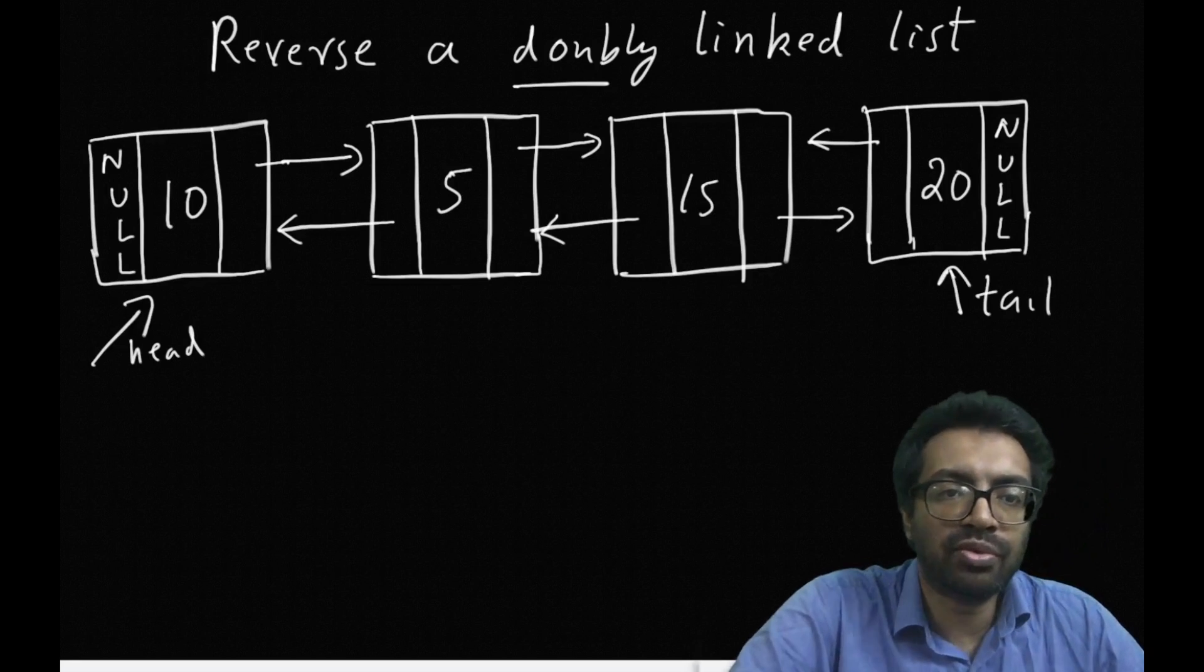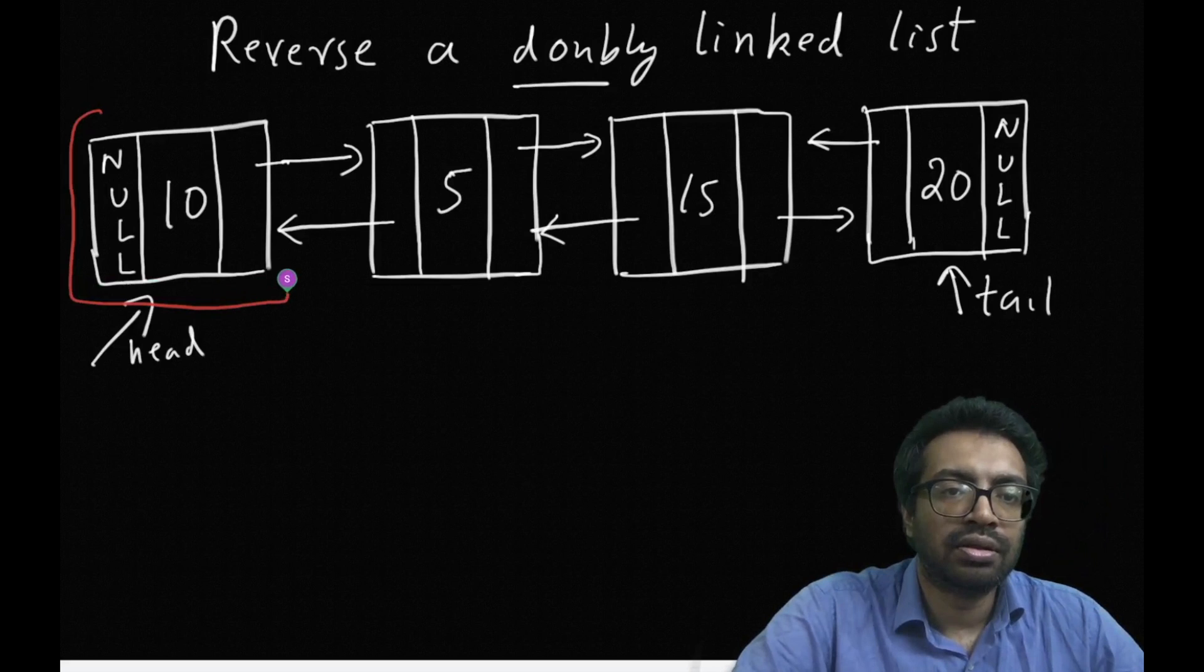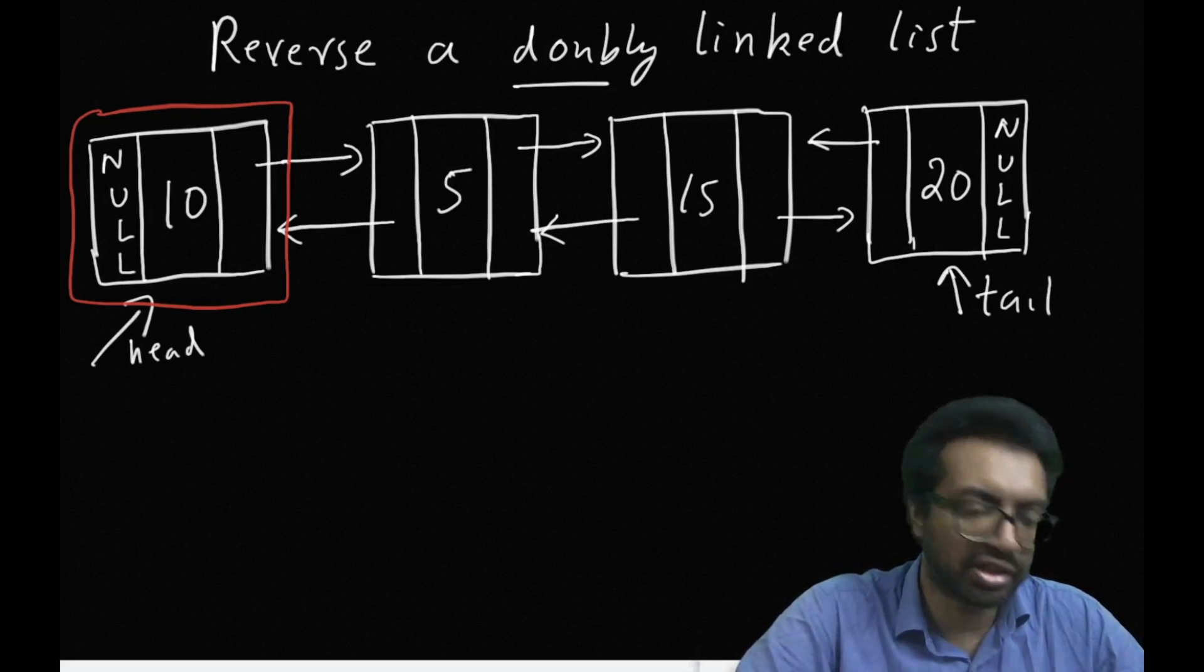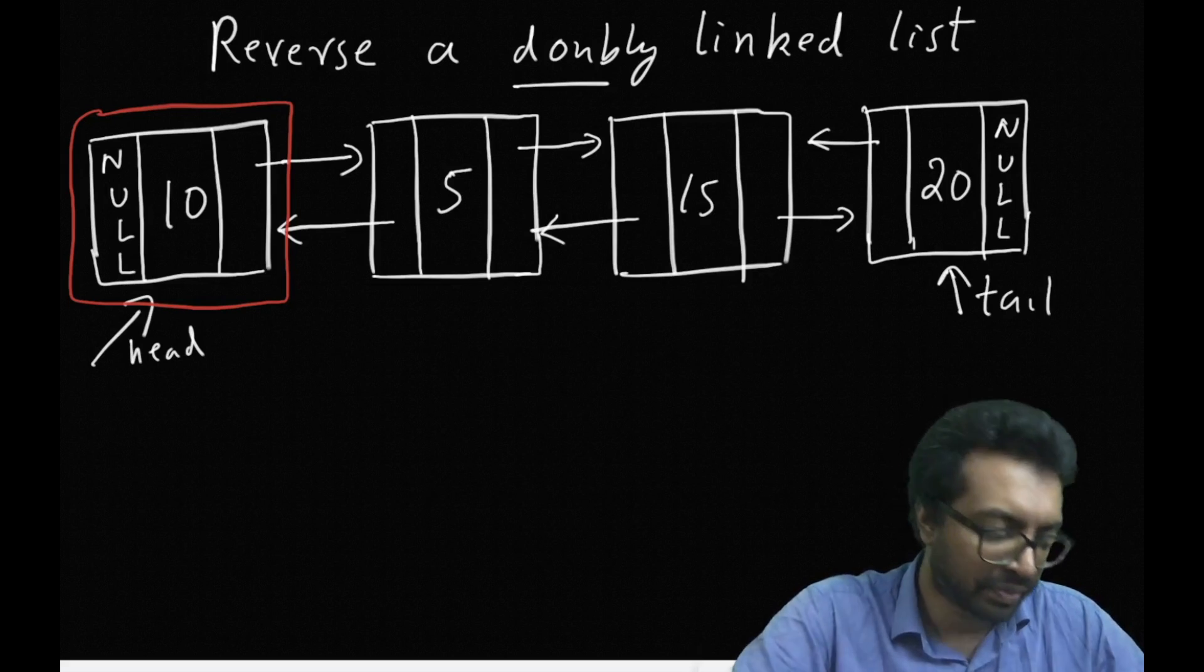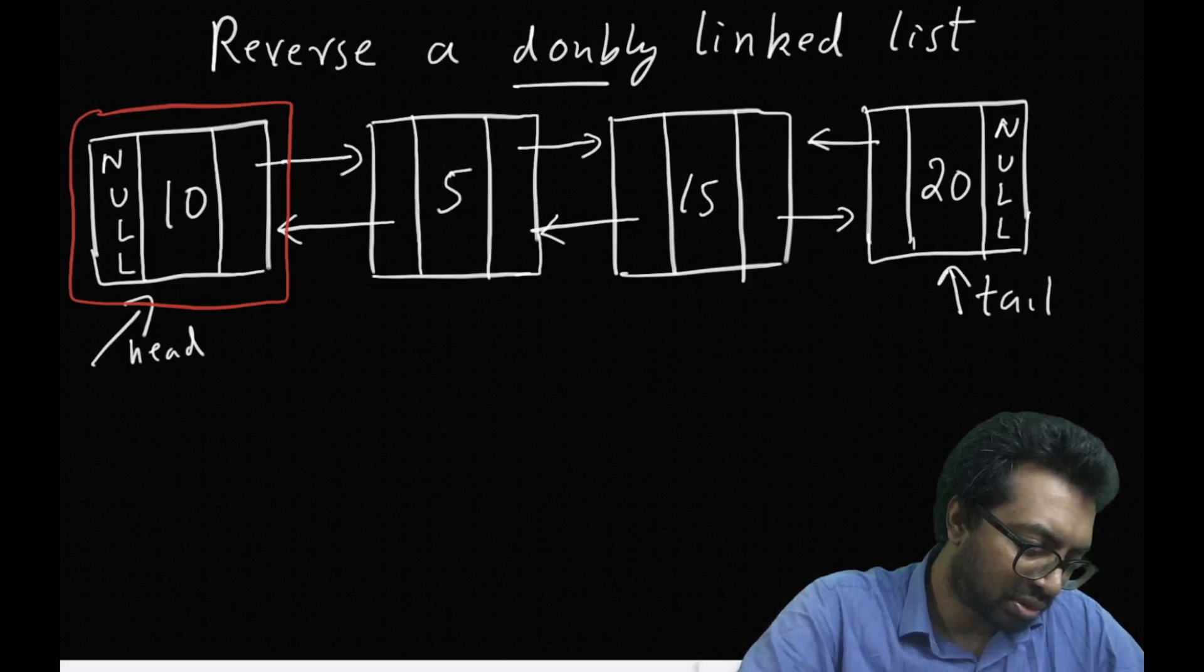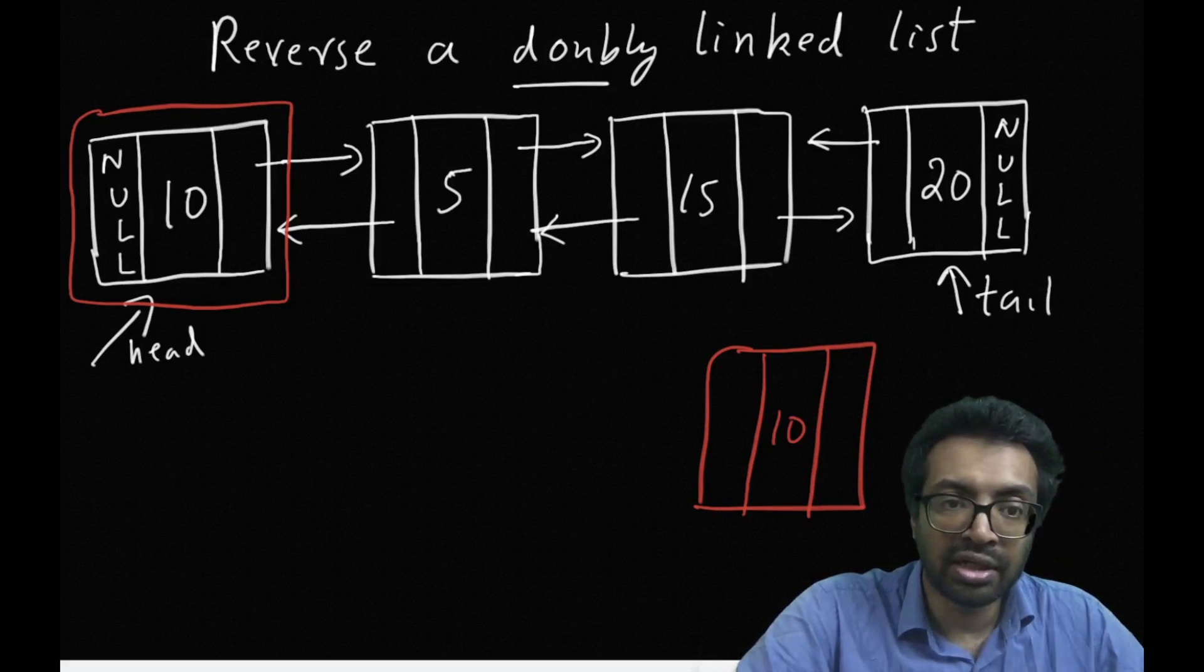So first we remove this node, this is the front node, and I am going to remove it using the remove front function and I am going to add this node as front of the new list that is going to come here. This is step one.